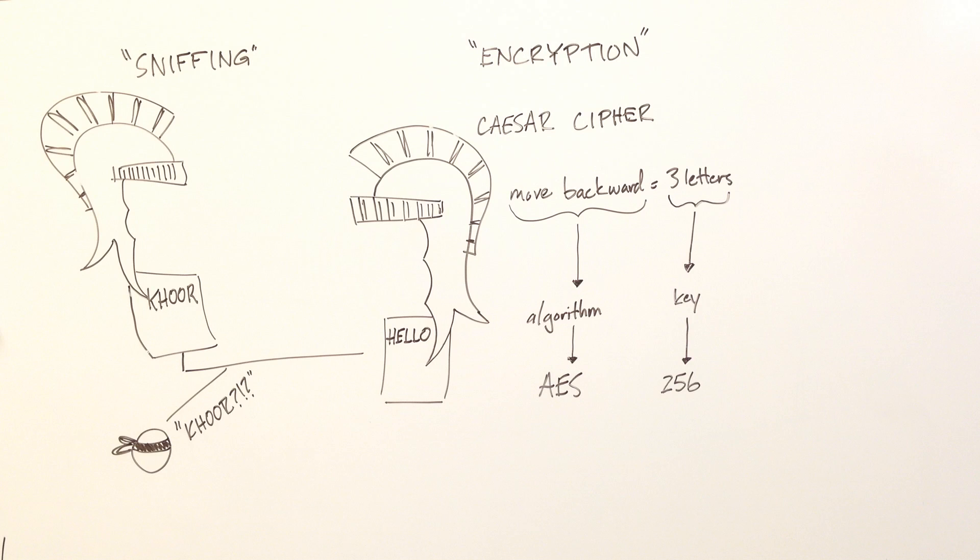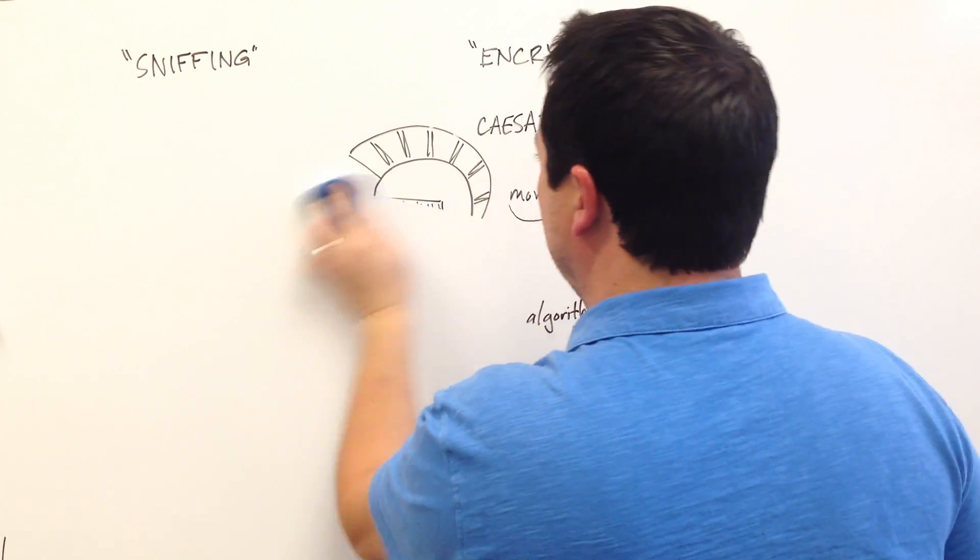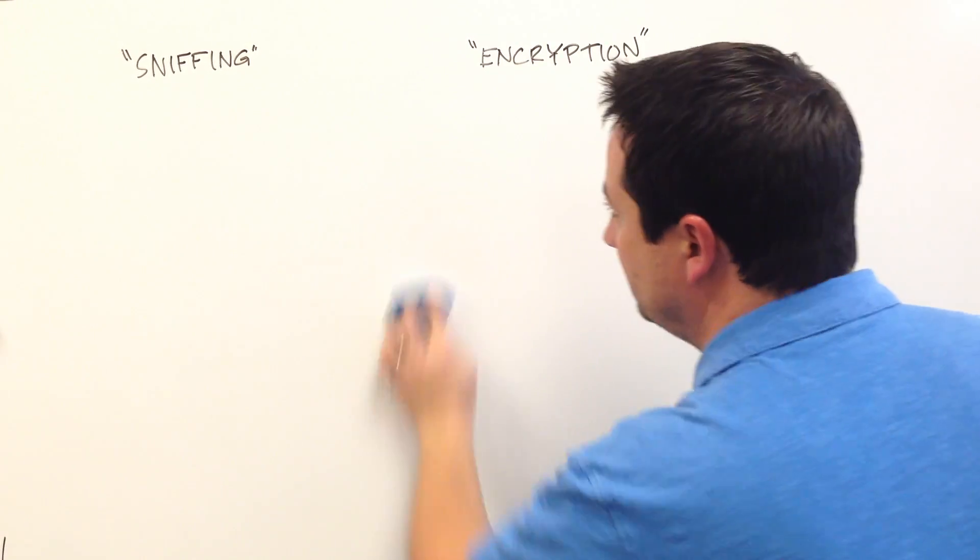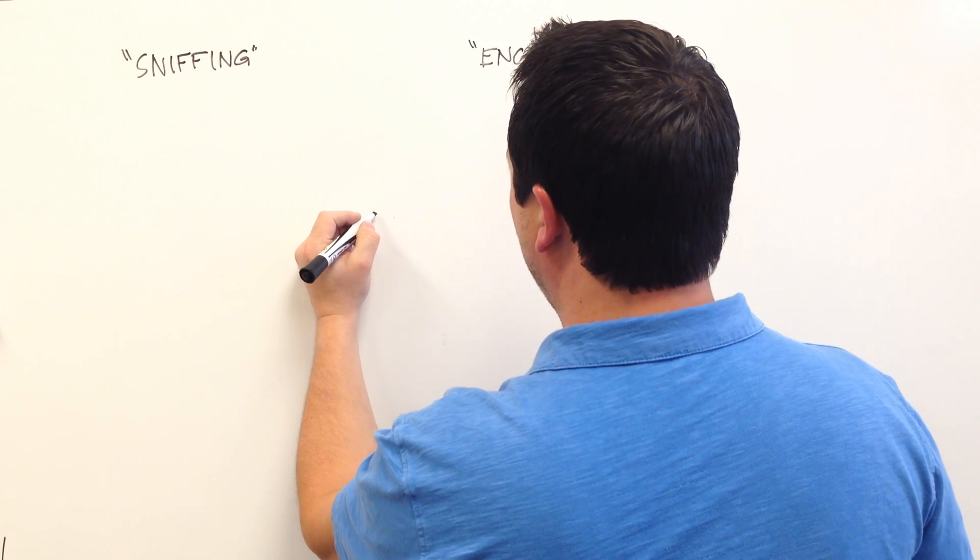Computers are capable of millions of calculations per second, so good encryption such as AES-256 contains very complex mathematical algorithms and very long keys, far too complex to explain with a whiteboard and a marker.